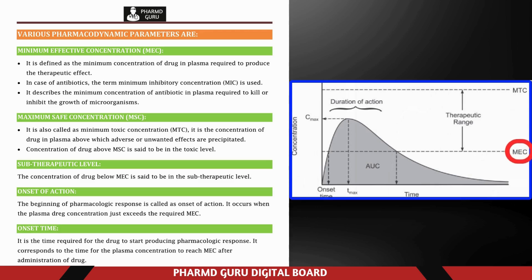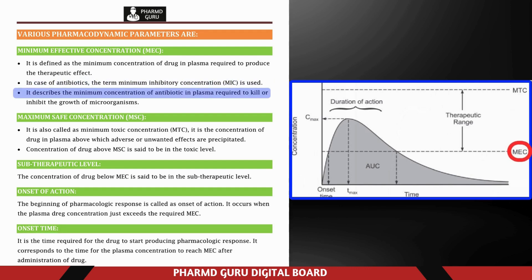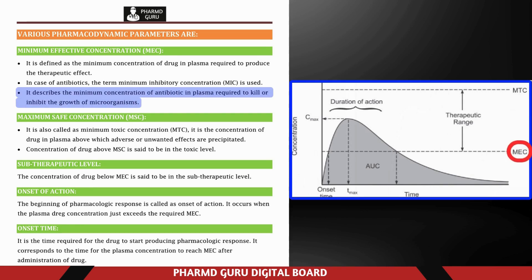Now let's look at some pharmacodynamic parameters. Minimum effective concentration (MEC) is the lowest concentration of a drug in the bloodstream required to produce a therapeutic effect. If the concentration is below MEC, the drug won't show a therapeutic effect. For antibiotics, the term changes to MIC — minimum inhibitory concentration — defined as the minimum concentration of antibiotic in plasma required to kill or inhibit the growth of microorganisms. For example, if penicillin doesn't reach its MIC, bacteria may continue to grow or develop resistance.